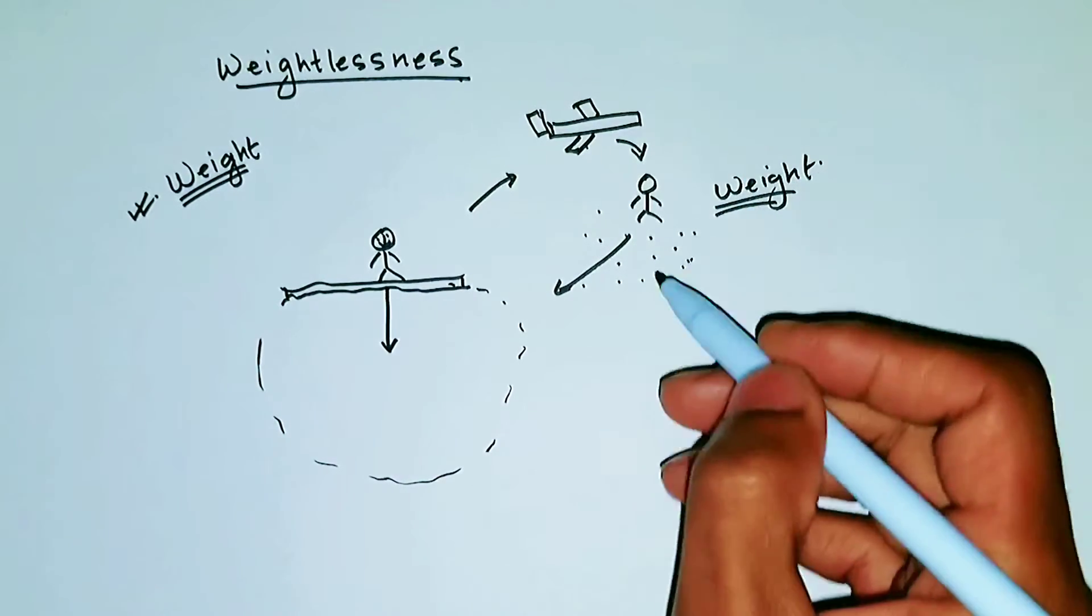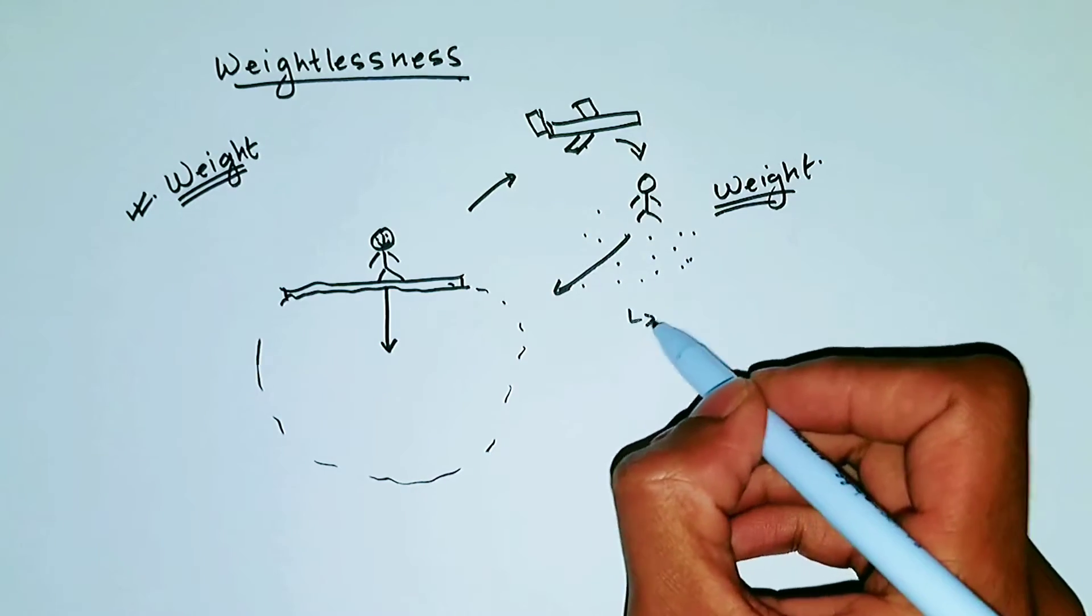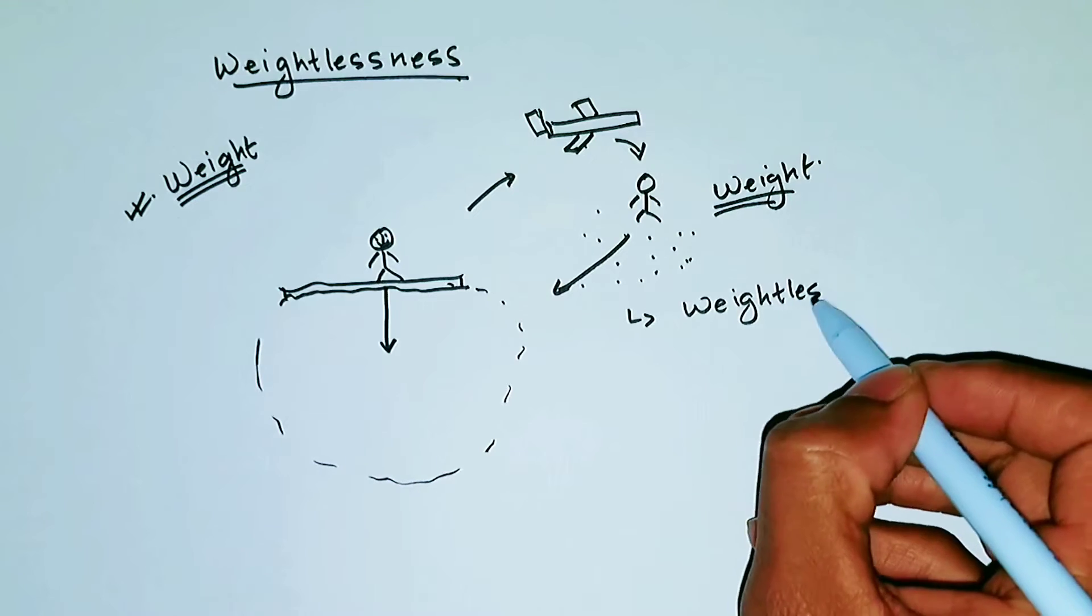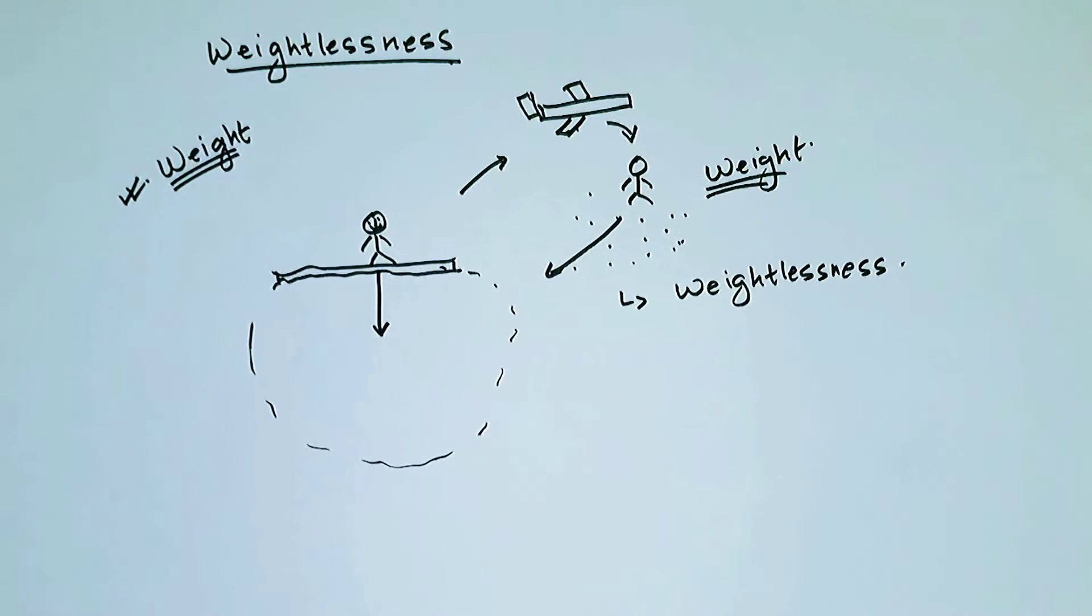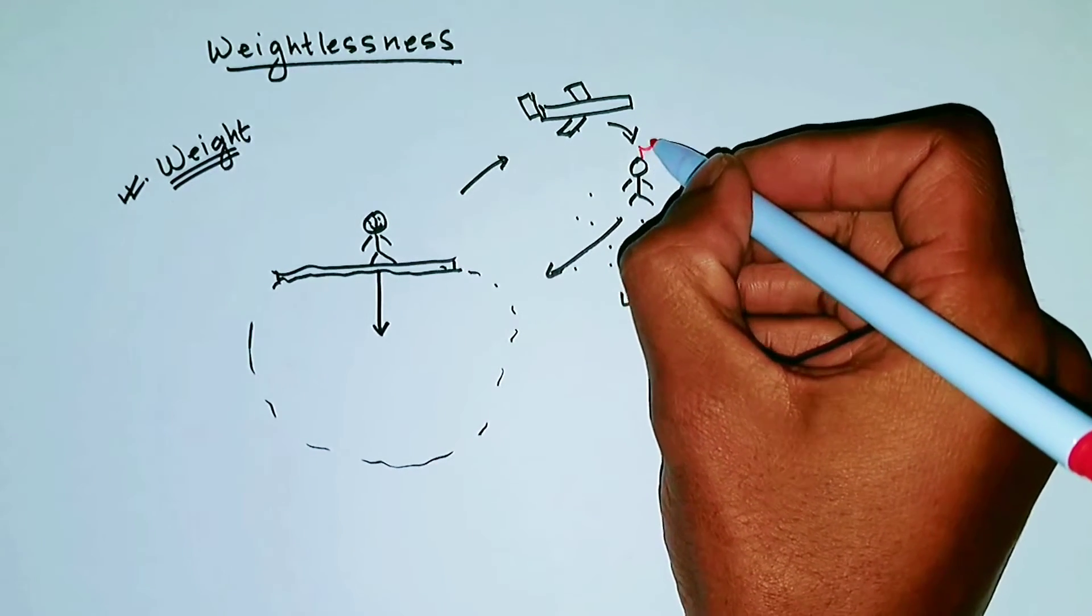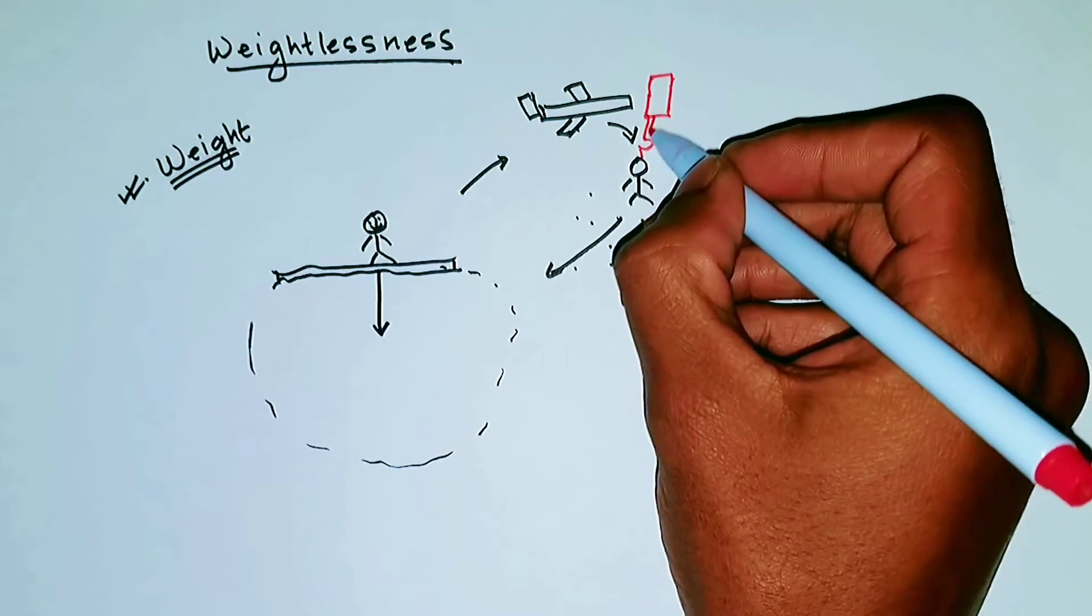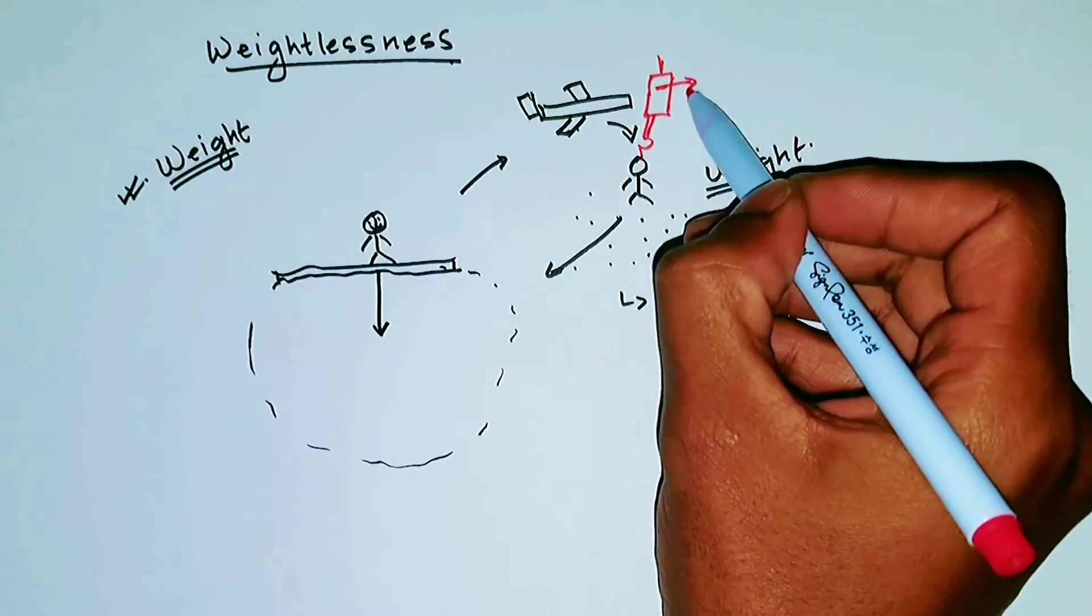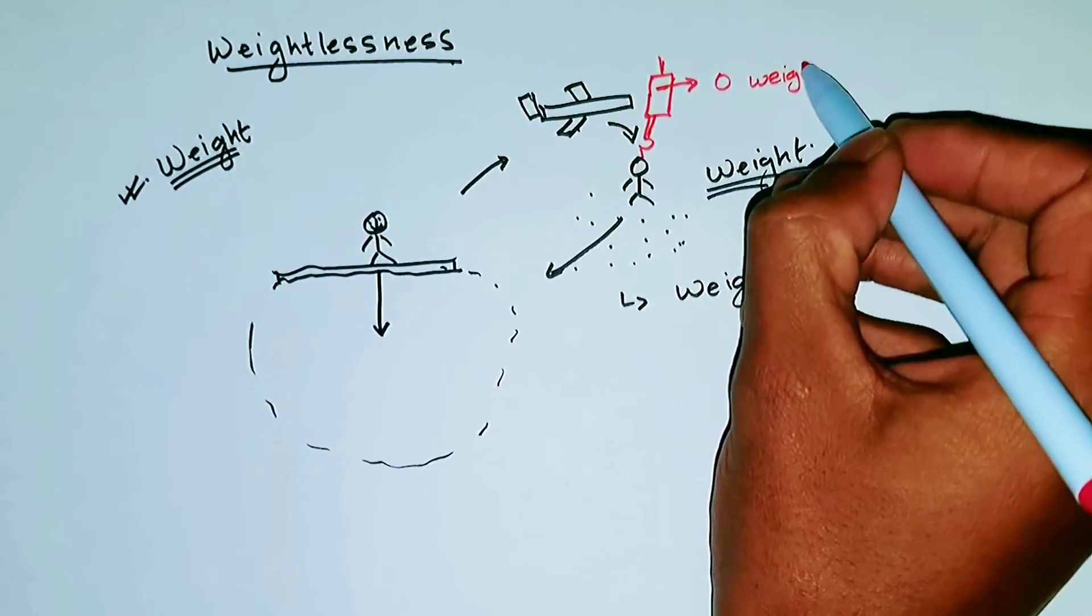In this situation, he feels like his weight is zero, and this condition is called weightlessness. Now, we can experiment this. So, if you put a weighing machine when he falls here, and we look at this weighing machine with a camera, then this weighing machine will say zero weight when he is falling.